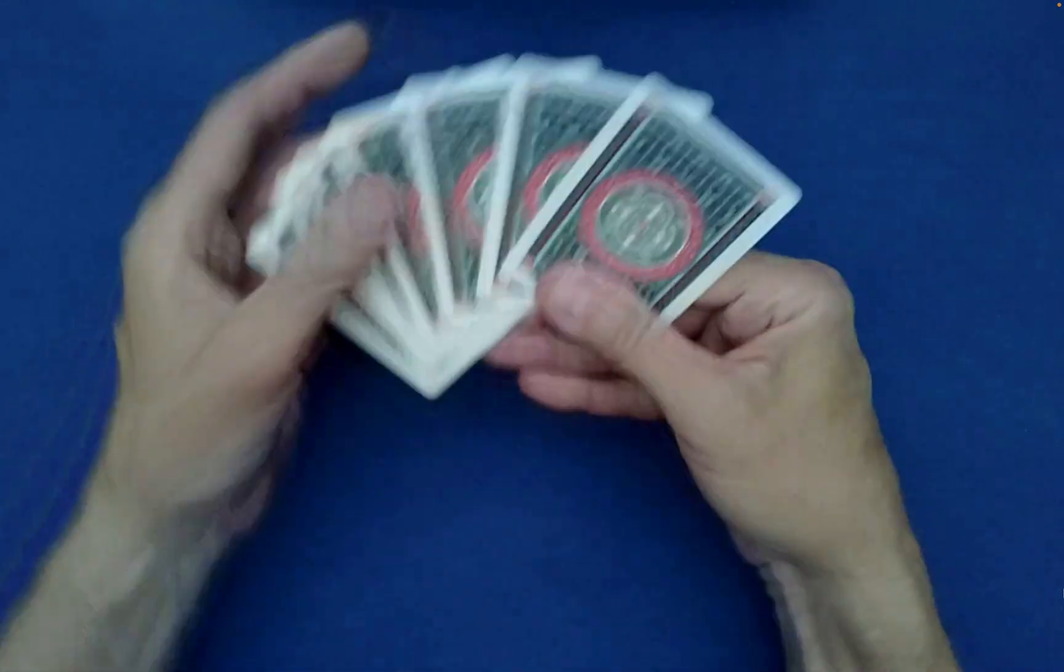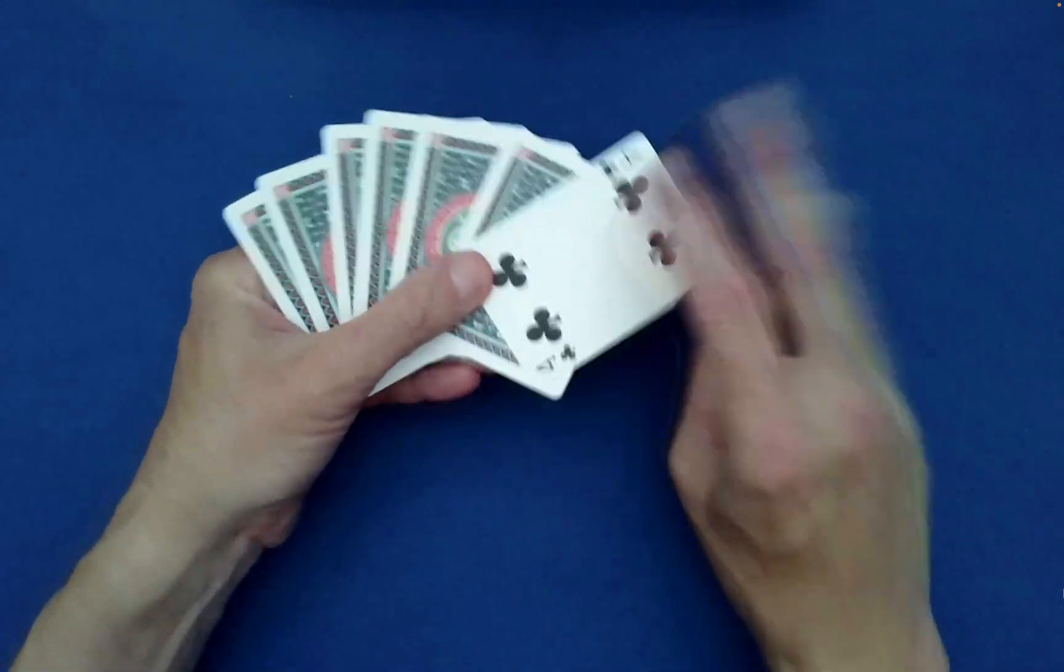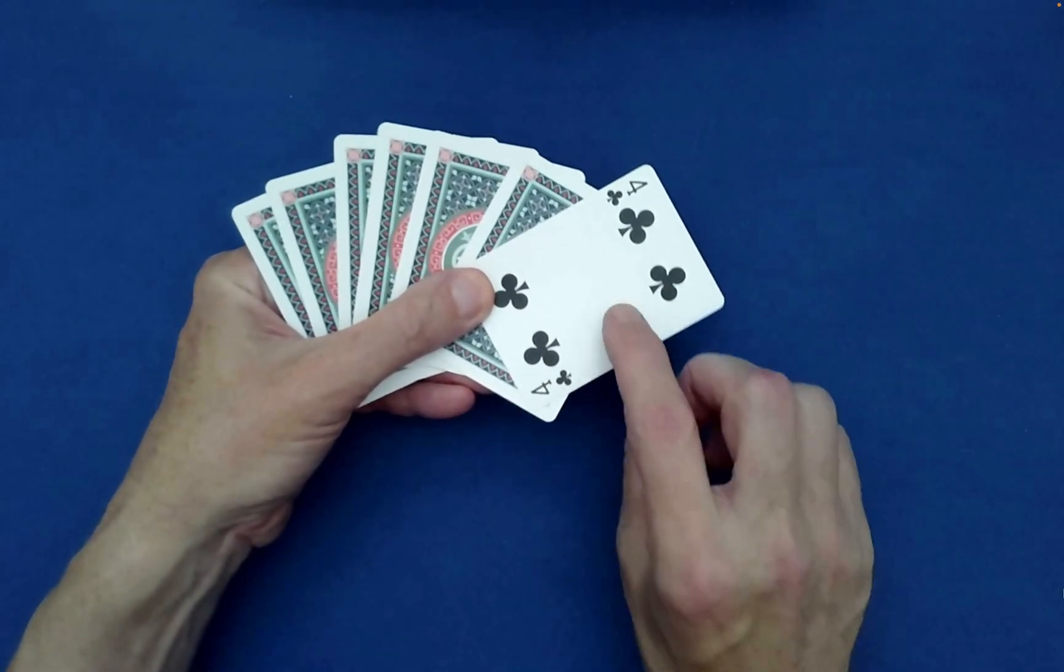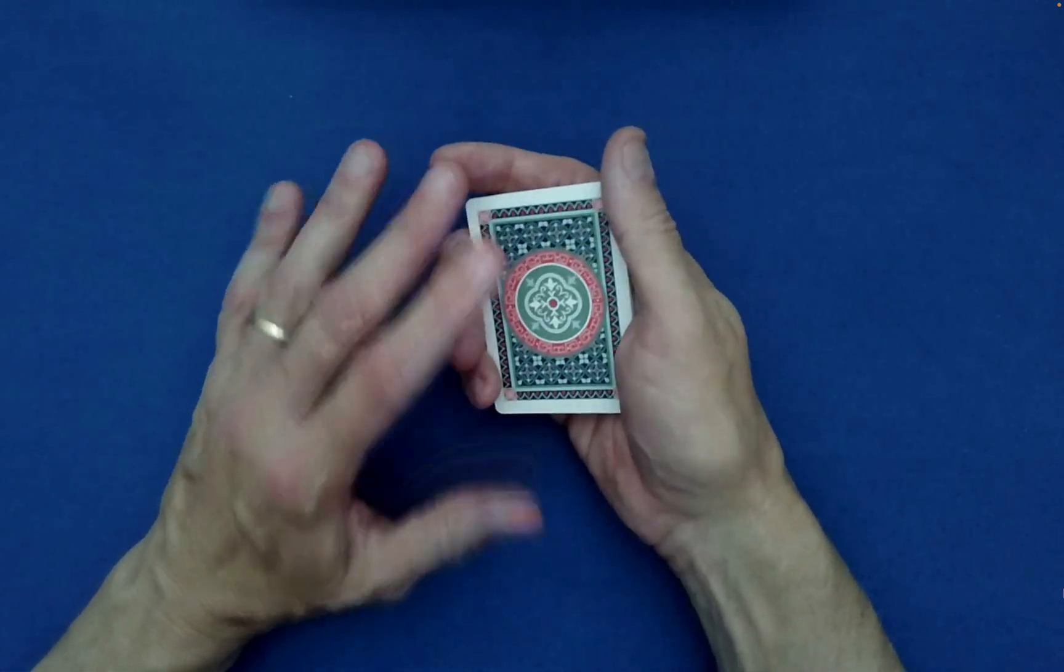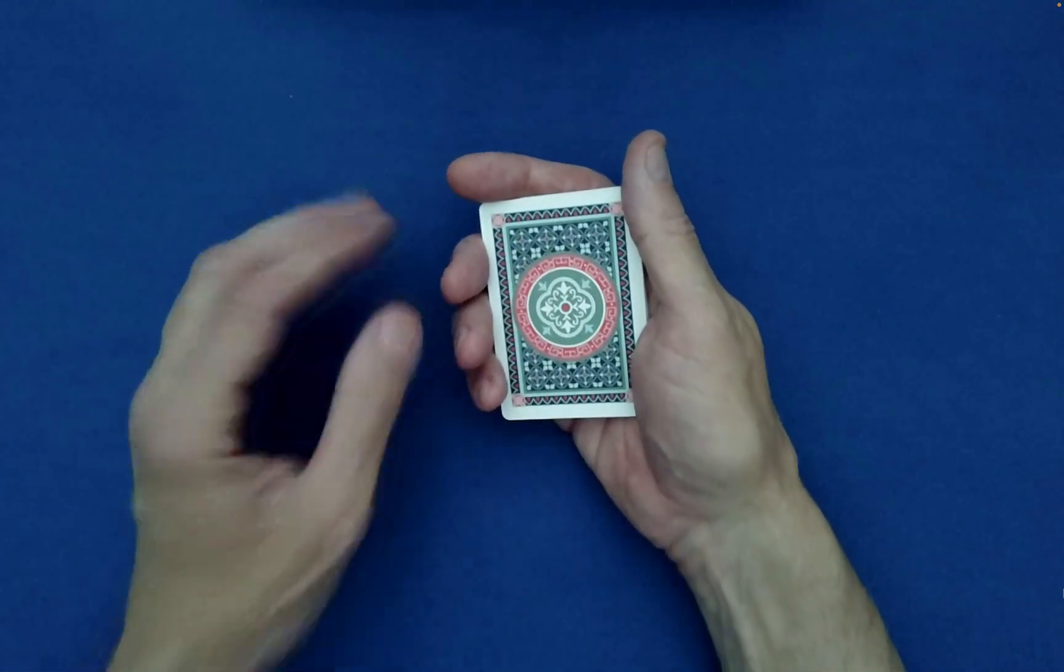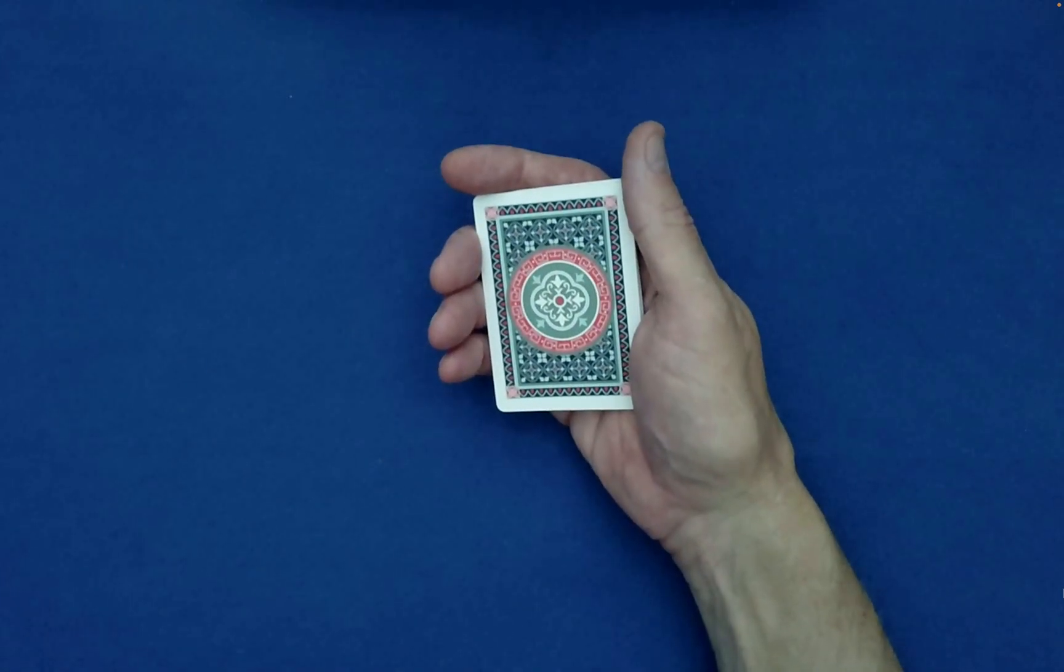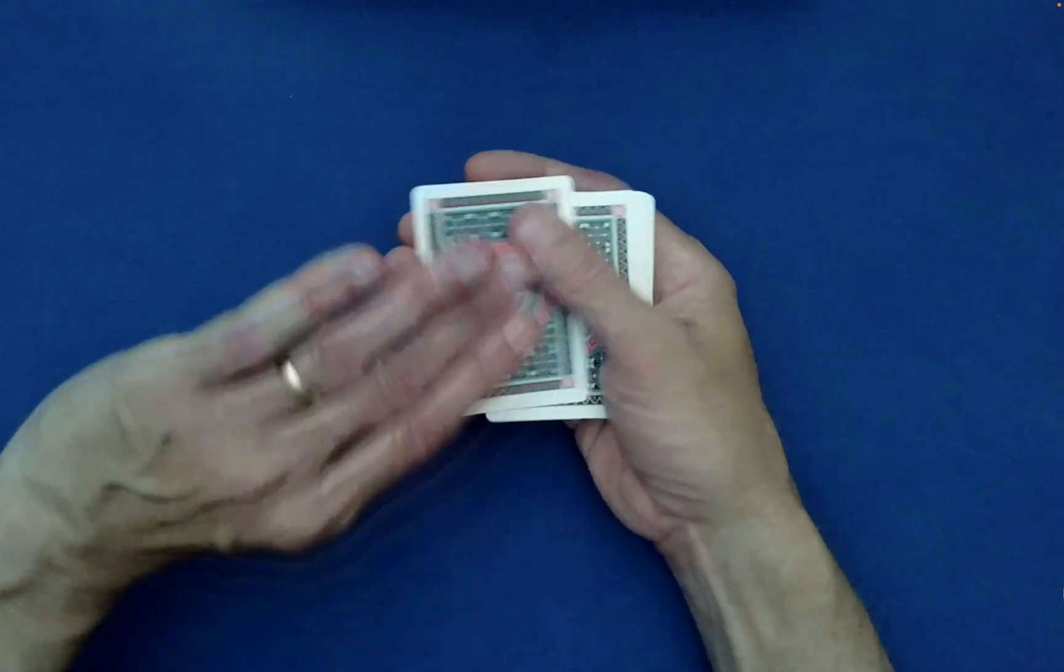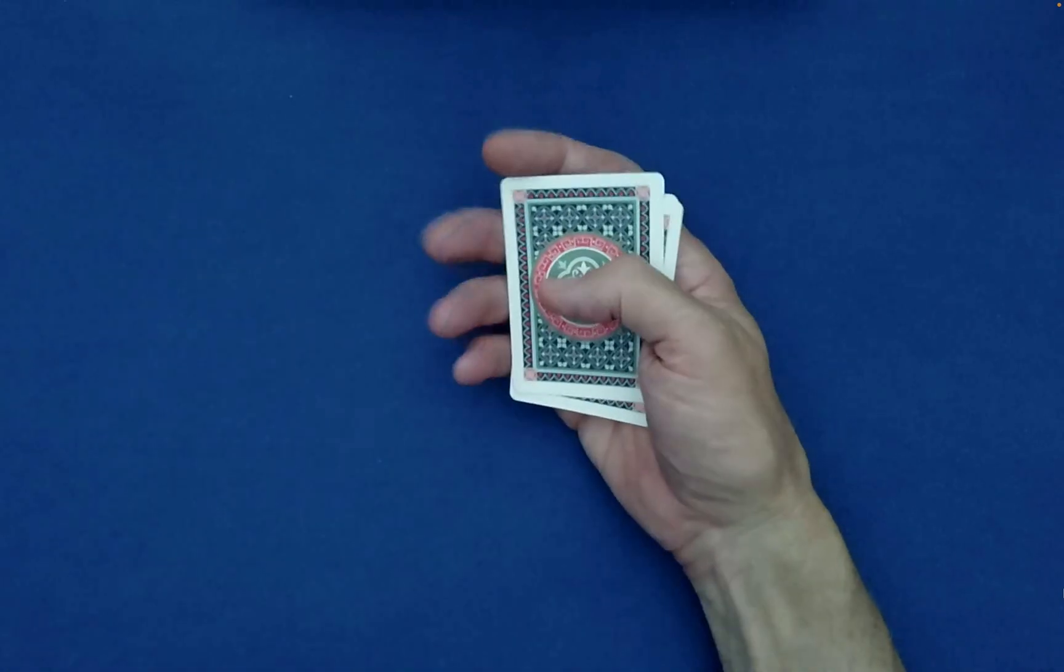So you just need a prime number of cards. You need to be aware of the identity of this one or have a special one there that you'll reveal. And then you just go through this procedure. So any number between one and one less than the prime number of cards you have, this procedure will always lead to a revelation of the original top card as the final one to be flipped up.